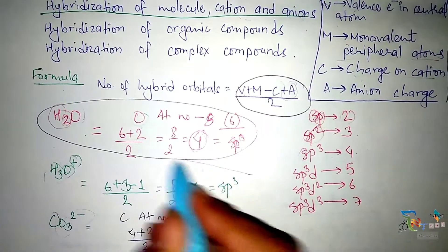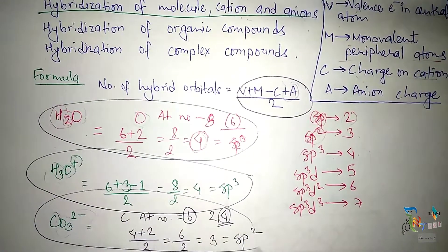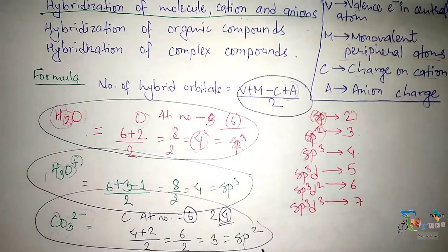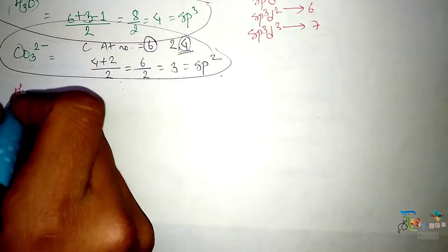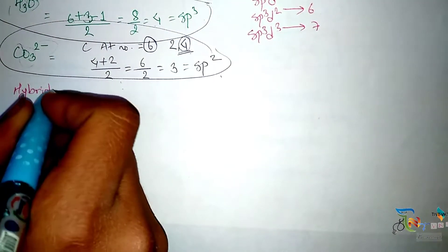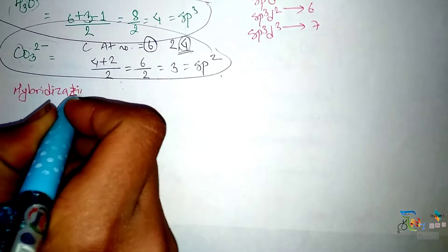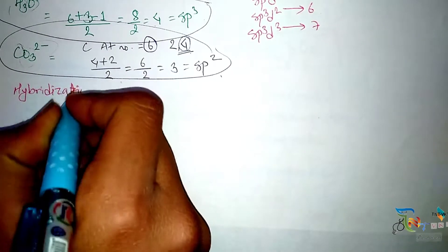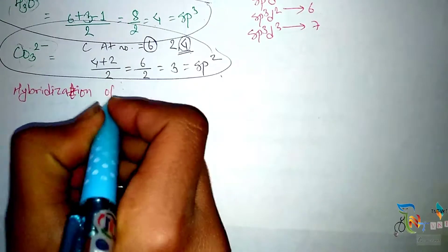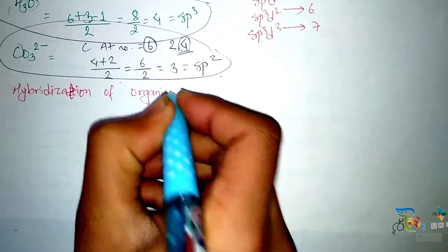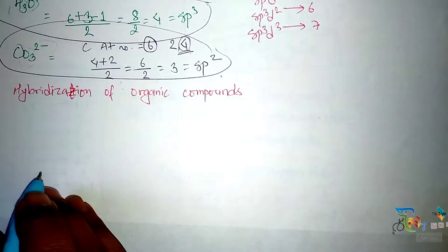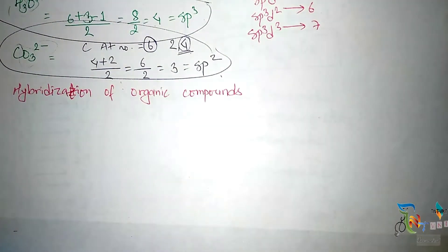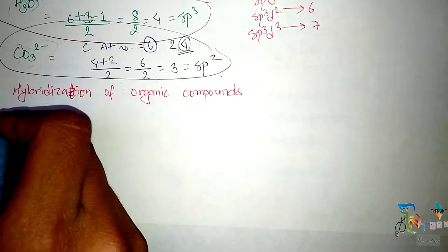Now let's move to the second part: hybridization of organic compounds. The formula for calculating hybridization of organic compounds involves counting sigma bonds and attached hydrogens for each carbon.